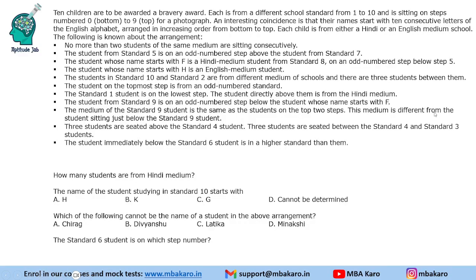Welcome to Aptitude Jab. This is an arrangement problem: 10 children are seated on stairs, belonging to different school standards from 1 to 10, sitting on steps numbered 0 to 9 — 0 is the bottom, 9 is the top. Their names start with 10 consecutive letters of the English alphabet, arranged alphabetically from bottom to top. Each child is from either a Hindi or English medium school. Based on the given information, we must arrange these students on the 10 steps.